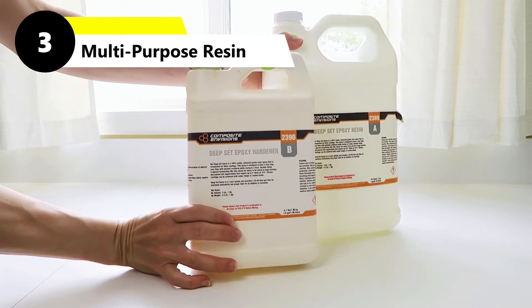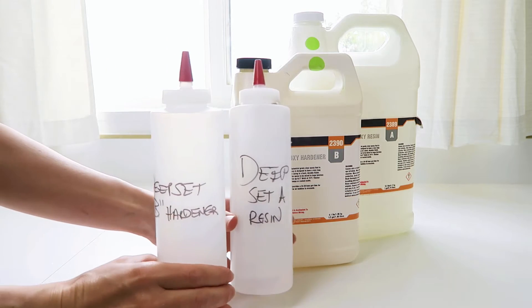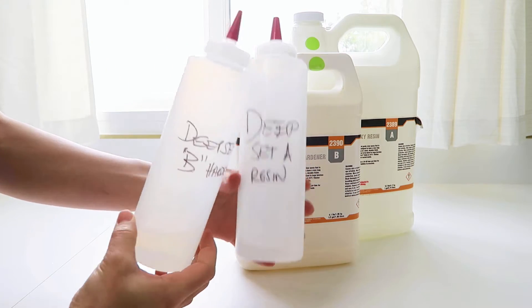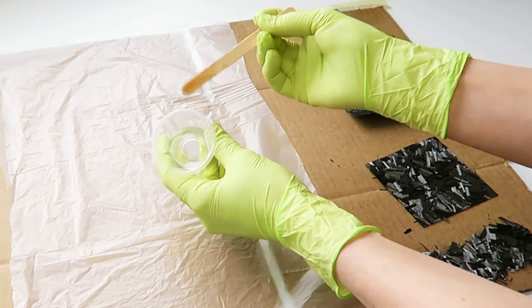Tip 3: Choose a versatile resin. Buy it in bulk, then portion it into small squeeze bottles so it's easy to dispense accurately for small projects. This deep-pour epoxy works for laminating, coating, casting, and infusion.